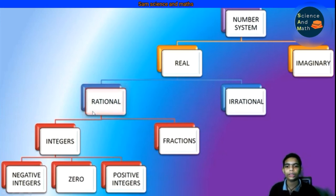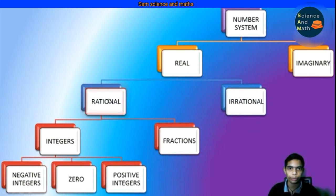Positive integers are natural numbers or counting numbers. The set of 0 and positive integers are whole numbers. In this video we are going to focus on rational numbers — this is going to be an introduction video.